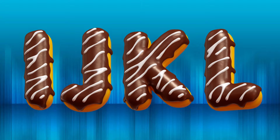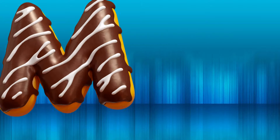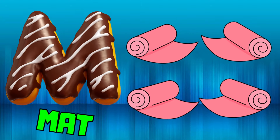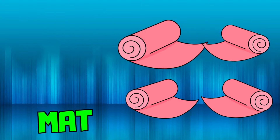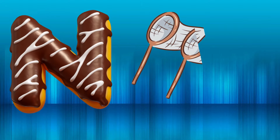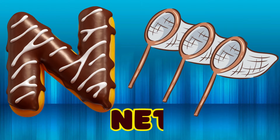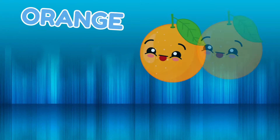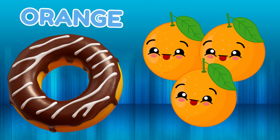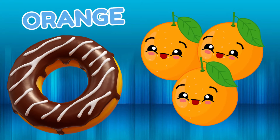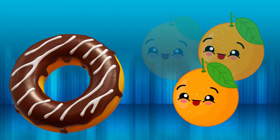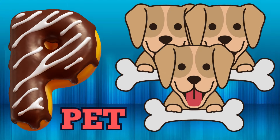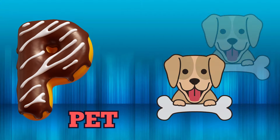M is for mat, m-m-mat. N is for net, n-n-net. O is for orange, o-o-orange. P is for pet, p-p-pet.